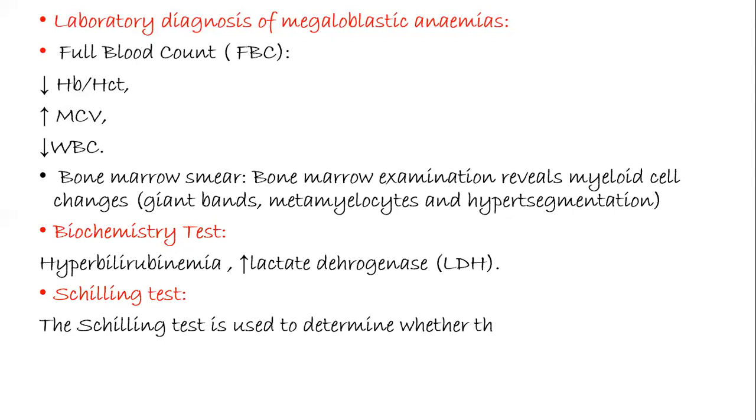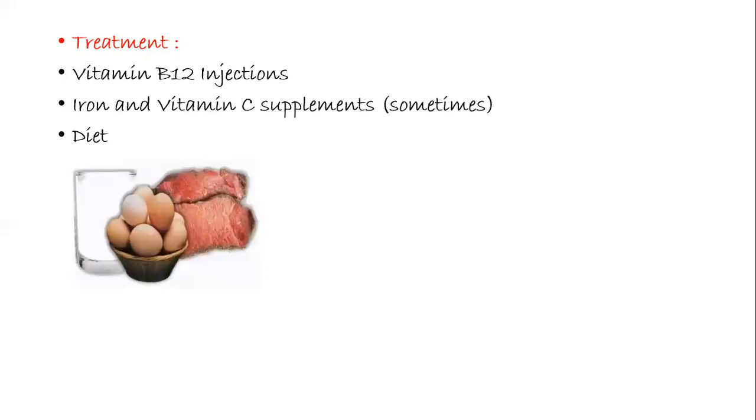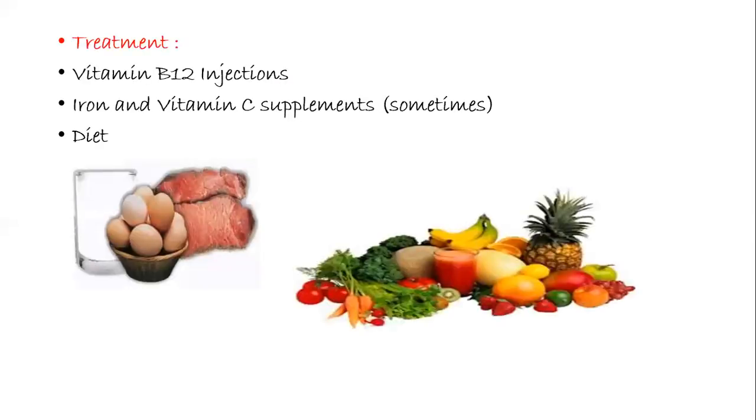There is also one specific test called the Schilling test. It is used to determine whether there is faulty absorption of vitamin B12. In this case, vitamin B12 is ingested in the patient and it is tracked using radio technology. Now the treatment involves vitamin B12 injections, iron and vitamin C supplements. Sometimes diet changes - you have to increase your content of diet. You have to focus more on fruits and green leafy vegetables, and also focus on some meat products. Thank you.